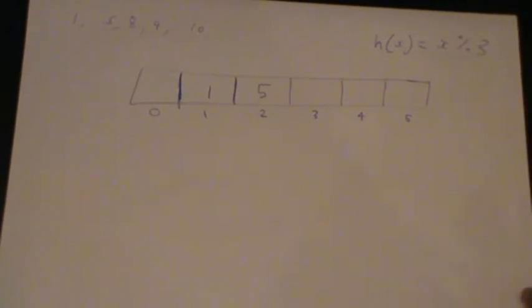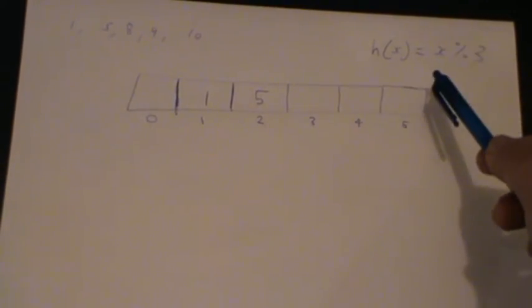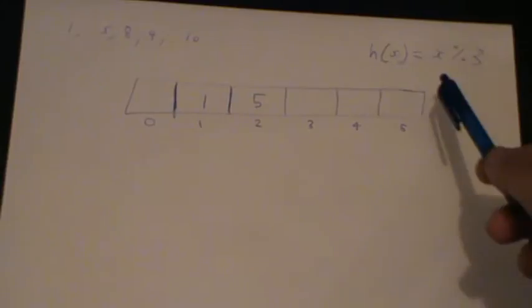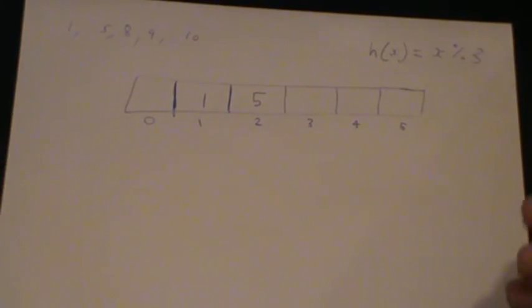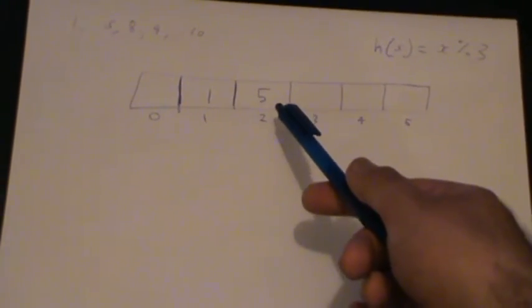Now we might have a problem. Say we wanted to insert 8, so we get hash function h of 8, so 8 mod 3 is 2, and we see we already have something there in the slot, in the second slot.